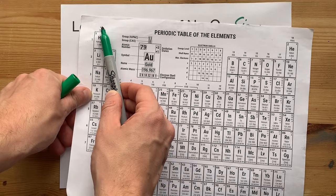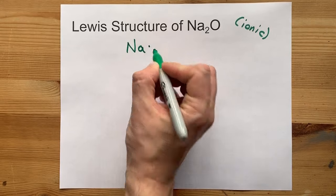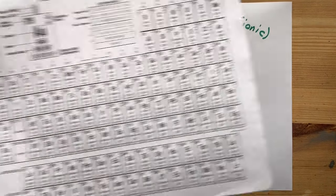Na is in group 1. It has one valence electron. So, there's my Na. There's my dot for the one electron.